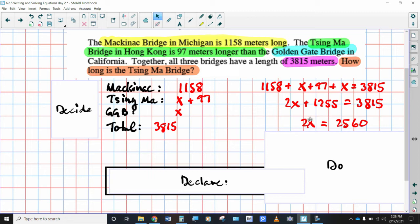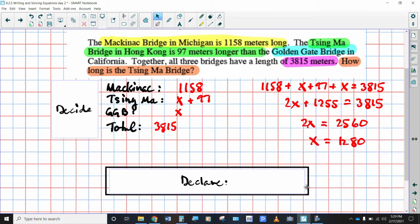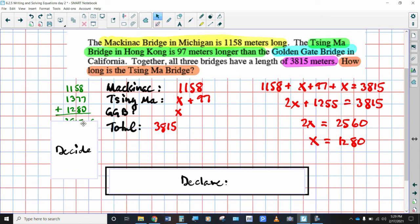Because when you add 1255 and 2560, you get 3815. So now, what does X have to be? If two of them is equal to 2560, what would one of them be? Take 2560 divided by two, and you should get 1280. So that's telling us how long the Golden Gate Bridge is. So if this is 1280, this is 97 meters longer than that. So we're going to add the Mackinac Bridge to the Tsing Ma to the Golden Gate Bridge. Is this 97 more than that? Yes, it is. Use your calculator to make sure.